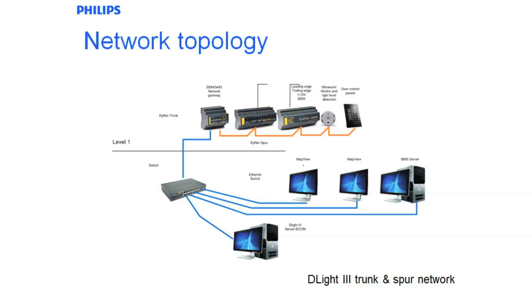We can basically jump onto that network and use it as a transport mechanism for getting our lighting controls up and down the riser at the Ethernet layer, dropping in an Ethernet bridge on each floor and effectively running the spur off each of those Ethernet bridges. This diagram also shows a couple of clients on separate PCs plugged into a switch, a BMS server, and in a typical application you may have up to 100 PCs running a TrayPan application for local task lighting control or local area control at very little cost.